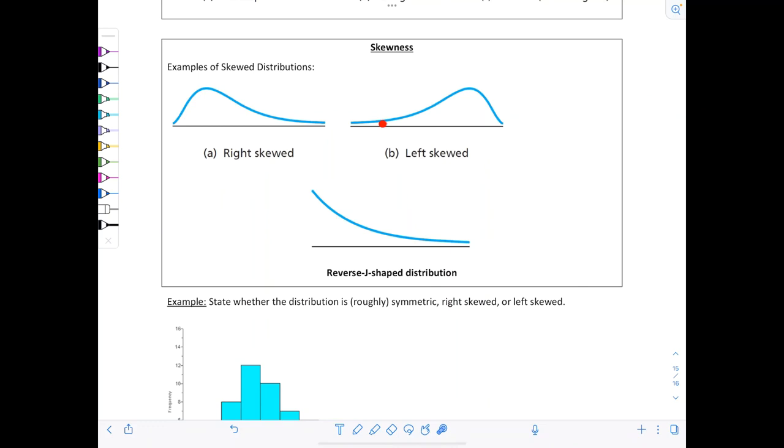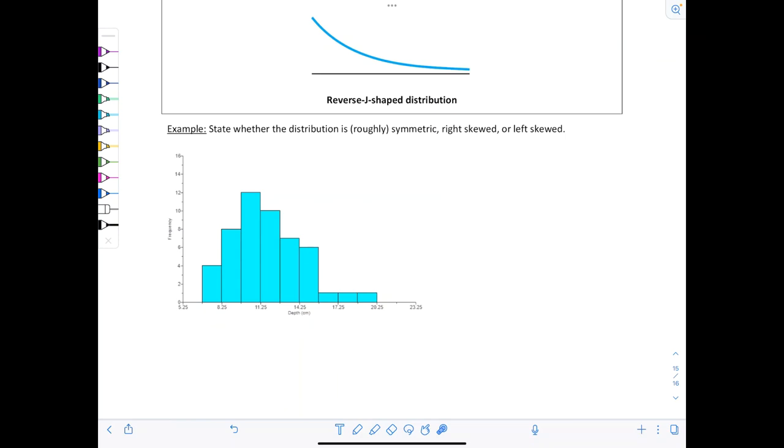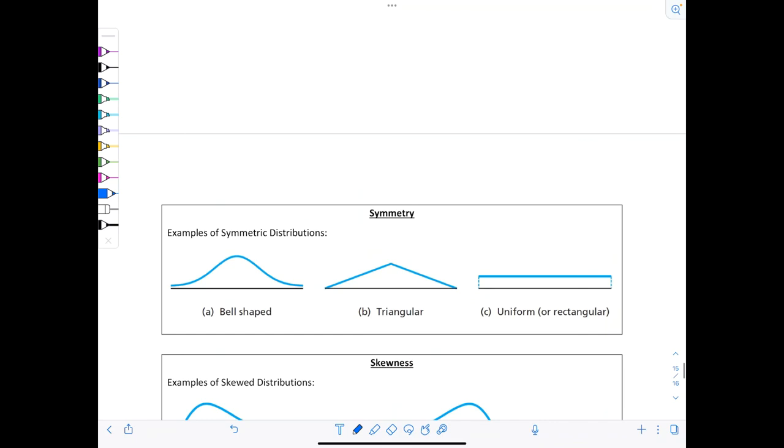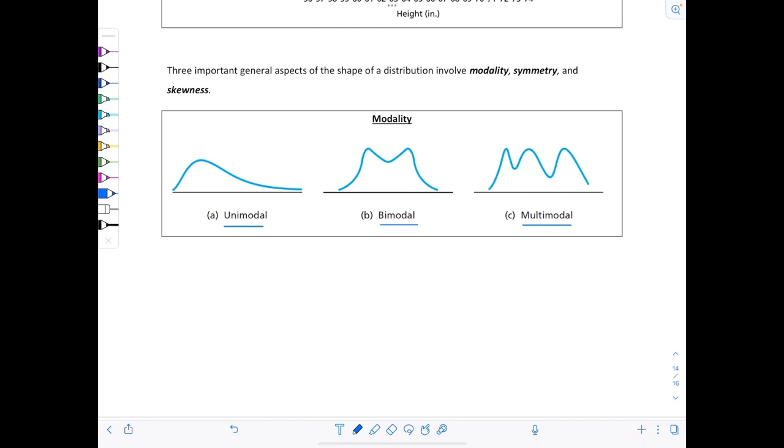Symmetry - is the graph symmetric with respect to the y-axis if you put it right in the middle? A bell-shaped graph is symmetric. Even this funky triangular graph is symmetric - if you fold it in half, you have a mirror image on both sides. This boring uniform distribution is also symmetric. If a graph is not symmetric, then it's skewed. If there's this little tail trailing extra values off to the right, it's right skewed. If the values trail off on the left, it's left skewed. And this funky looking thing is a reverse J-shaped distribution.